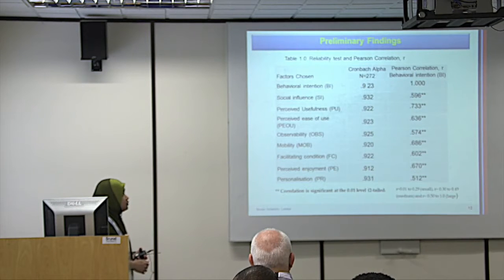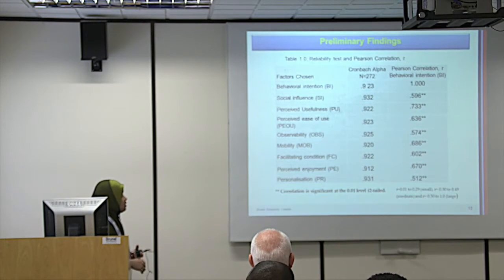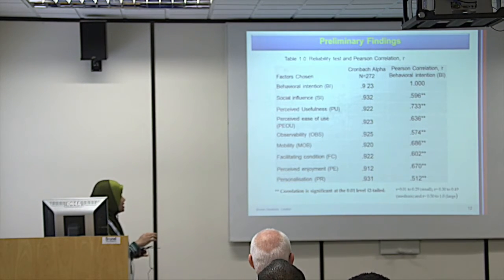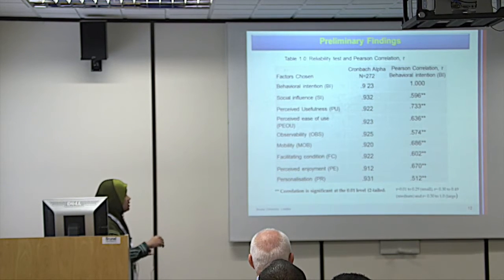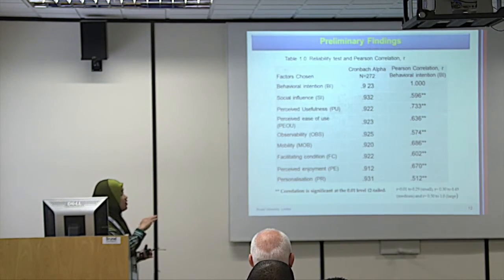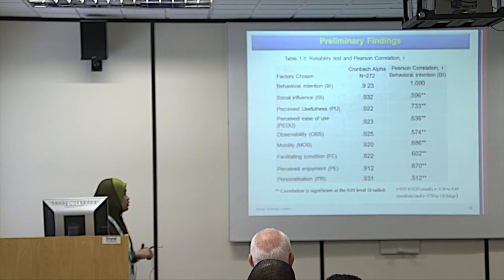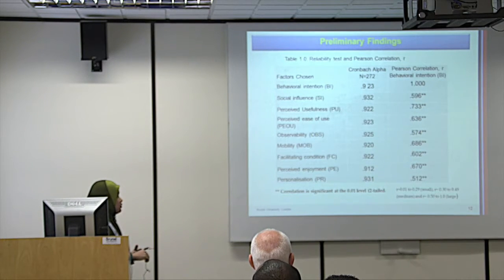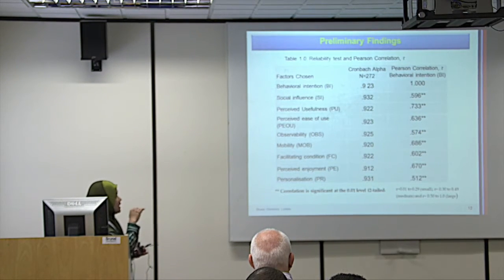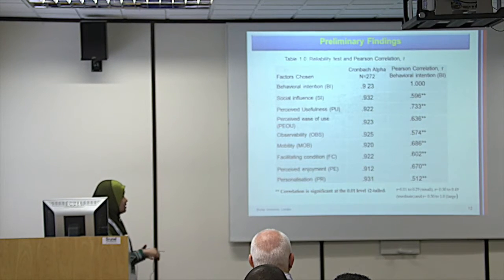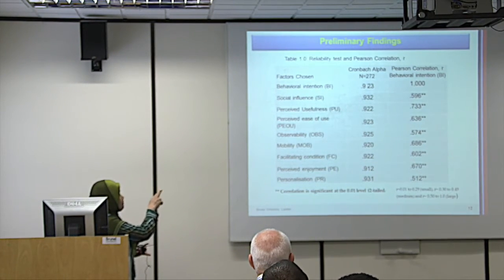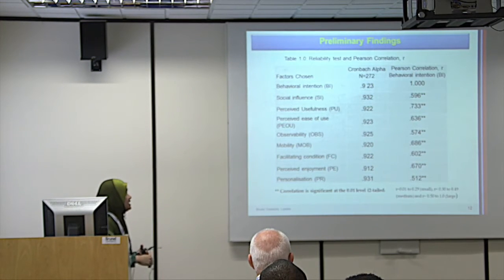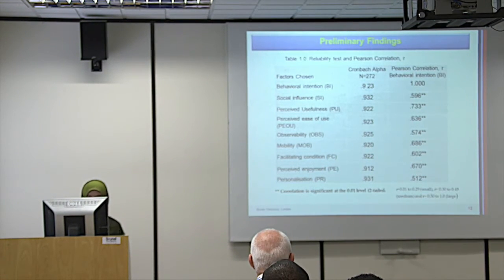For preliminary findings, I examined the correlations for behavioural intention. Correlation is considered weak at 0.1 to 0.29, and medium at 0.3 to 0.49. My results are quite large — all above 0.5 — for the correlation of the chosen factors towards the dependent variable, behavioural intention.